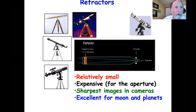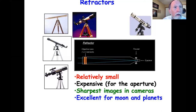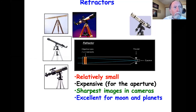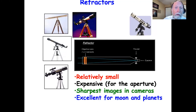Refractors use objective lenses to bend the light rays to a focus at the eyepiece. Because grinding the lenses is a fairly difficult process, the lenses are usually not very large. Most refractors are mounted on a tripod in a configuration that allows for a motor or clock drive to move the telescope to keep up with the Earth's rotation. On average, refractors are relatively expensive for the amount of aperture available. However, a good refractor shows a sharp image and is especially good for views of the moon and planets.